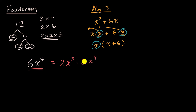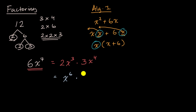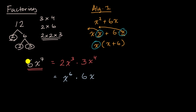But this isn't the only way to factor it — just as three times four wasn't the only way to factor 12. You could also express this as x to the sixth times something. We would still have to multiply by six, and then by another x. So we could write this as x to the sixth times six x. There are oftentimes multiple ways to factor a higher-degree monomial like this.